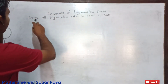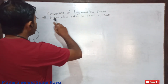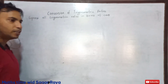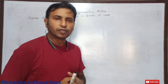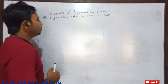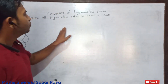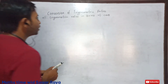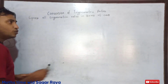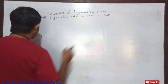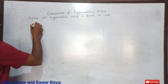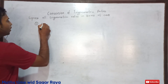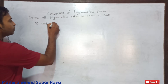Now without any delay, let's do our question. In the question, you can see we have to express all trigonometric ratios in terms of cos theta. In my previous video I expressed all the trigonometric ratios in terms of sine theta. Now today I am going to express all the trigonometric ratios in terms of cos theta.